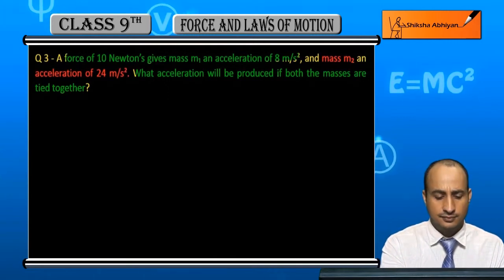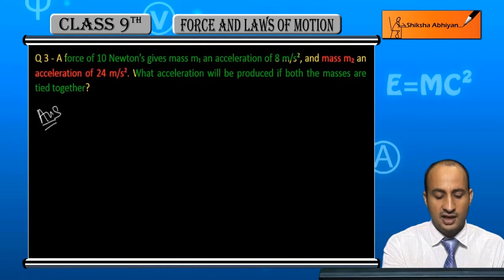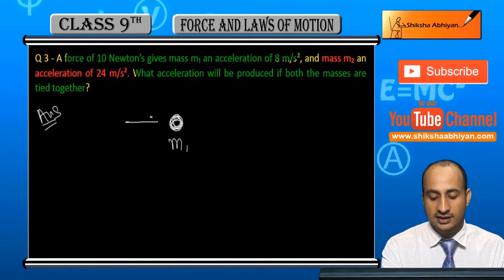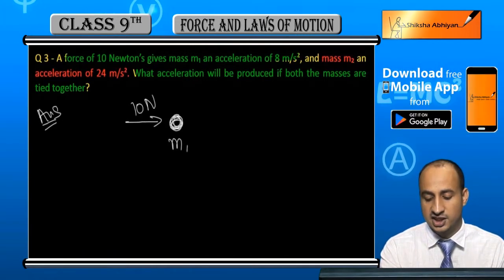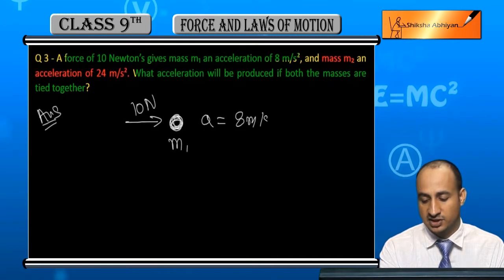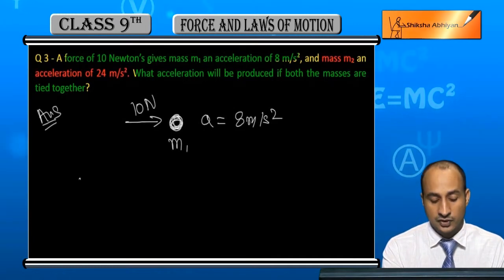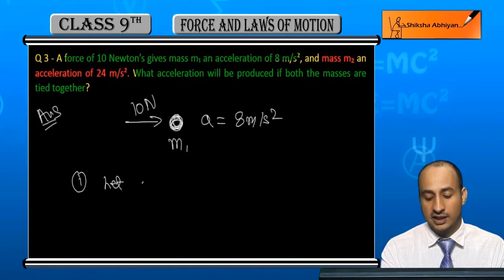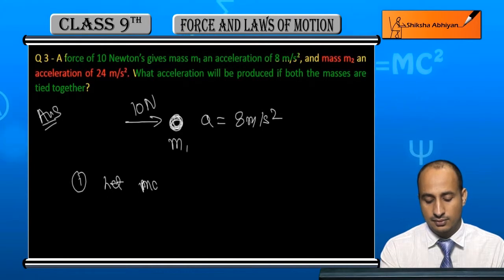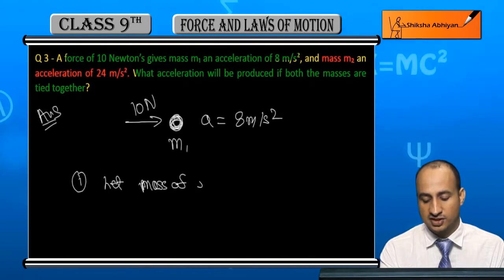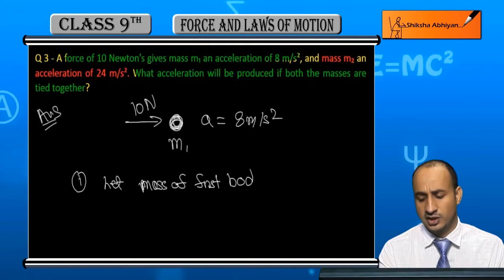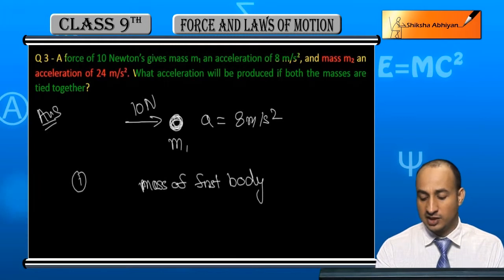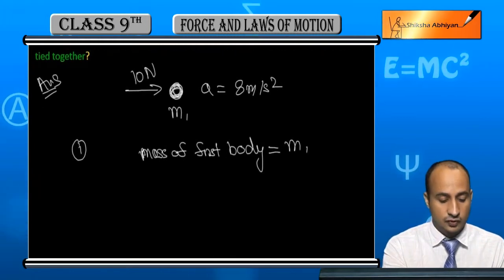Let's see, students. If we talk about the first mass m1 — m1 mass is not known. We know here the force is 10 newton and acceleration is 8 meter per second square. So here we will find the first mass of the first body.